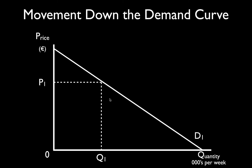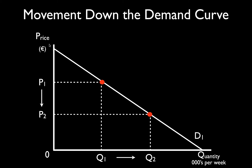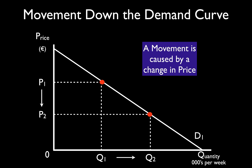A downward sloping demand curve shows that the good obeys the law of demand — as price rises people buy less, as price falls people buy more. As the price falls down to P2 we go out to the demand curve, touch it, and go down. This is called a movement because we started off at one point on the demand curve and moved down the existing demand curve. The demand curve itself has not changed — only the price has changed — so we're moving along a static, constant demand curve.